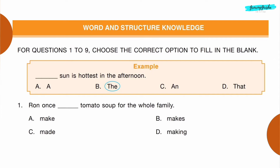Word and Structure Knowledge: for questions 1 to 9, choose the correct option to fill in the blank. Example: dash — the sun is hottest in the afternoon. Option B.